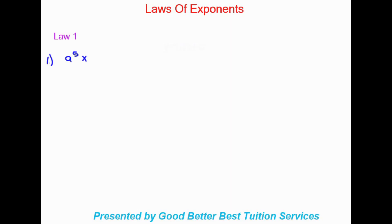Looking at law number one first, I'll use this example to explain it. We're given a to the power of five times a to the power of two. Law one tells us that where the bases are the same and we are multiplying, we add the exponents. So our bases are the same here, we keep that base a and we have five plus two, which gives us a to the power of seven.